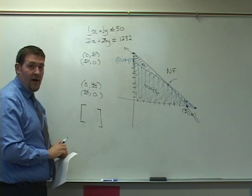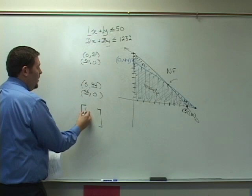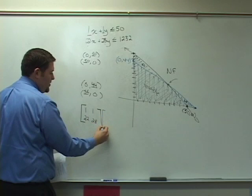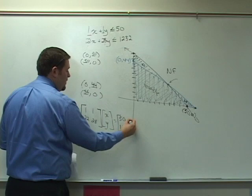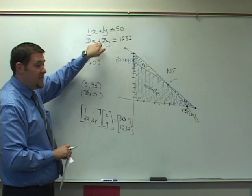It's a two-row by a two-column matrix that has 1, 1, 22, and 28 in it. When you use matrix multiplication and multiply by the variables x and y, those will be equal to our two constants, 50 and 1,232. Matrix multiplication allows us to set this up and it's equivalent to this system of inequalities.